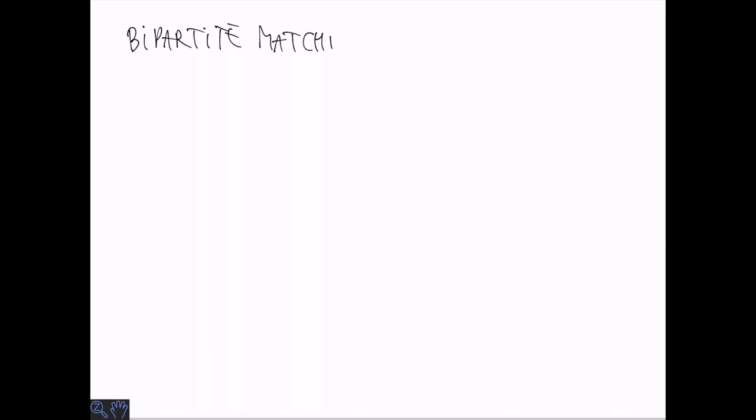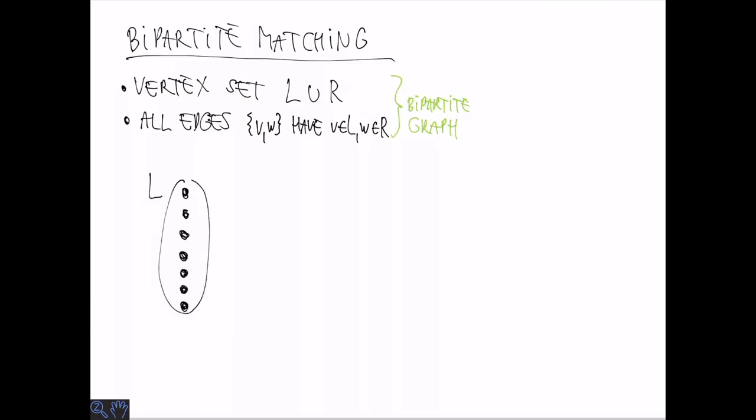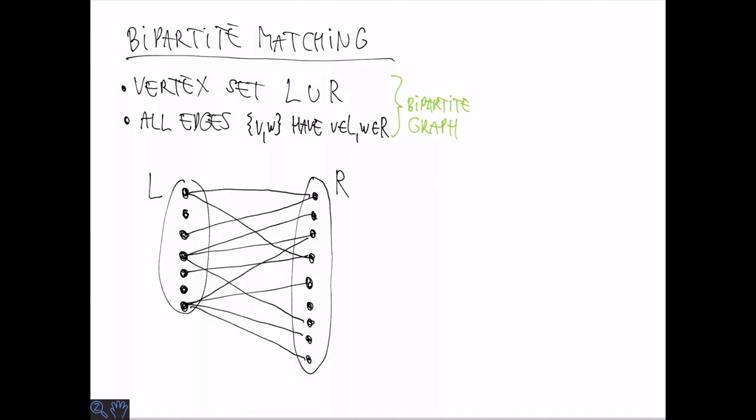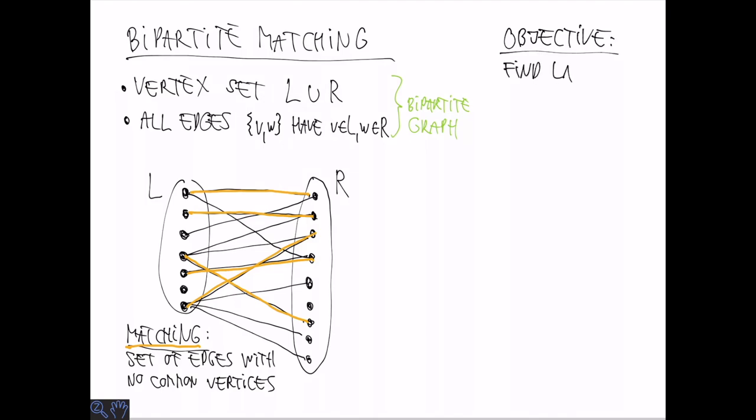In the bipartite matching problem, we have a bipartite graph. That is, the vertex set consists of two sets L and R for left and right respectively, and all edges go from one set L to the other set R. A matching in the graph is a set of its edges that do not share any common vertex. For example, the set of yellow edges I'm drawing now is a matching for the graph. The objective in the maximum matching problem is to find the largest possible set of edges that make up a matching.